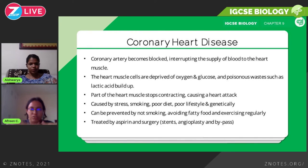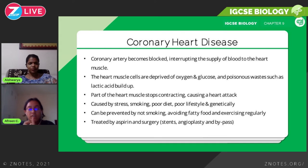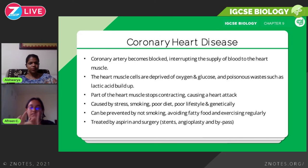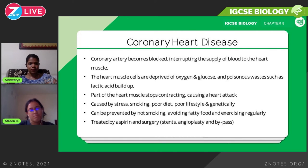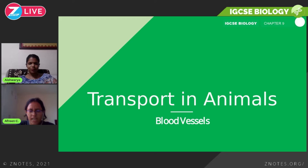Several procedures can be carried out for patients with coronary heart disease. If there is a heart attack, it can be helped with aspirin, and surgical options include stents, angioplasty, and bypass surgery — these are three different types of surgery. You don't need to know the details of the surgery, but it helps if you do.